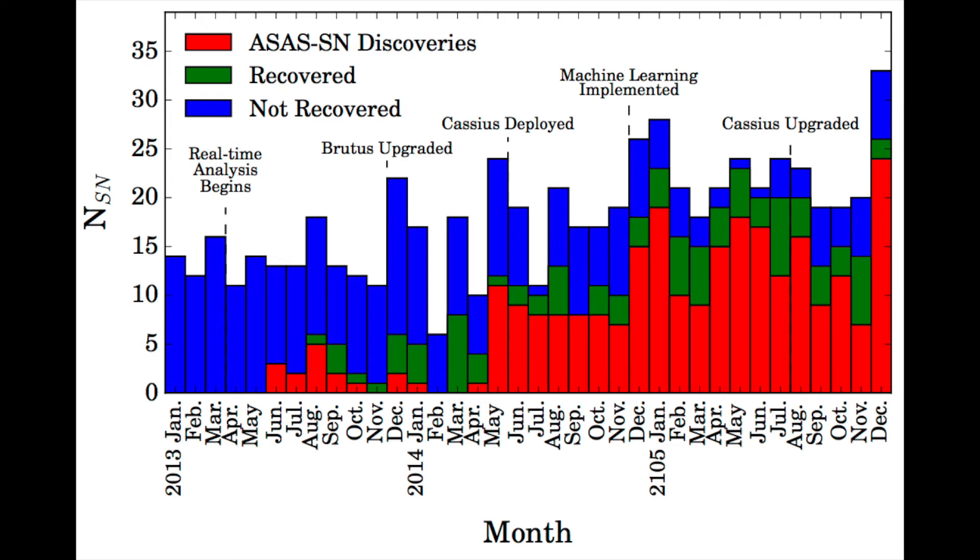Since ASASSIN became operational in both hemispheres in May 2014, ASASSIN has discovered or recovered at least half of all bright supernovae in every month, and the average number of supernovae discoveries has increased from 13 to 21. This implies that ASASSIN is finding supernovae that wouldn't be found otherwise.